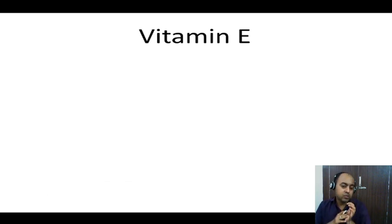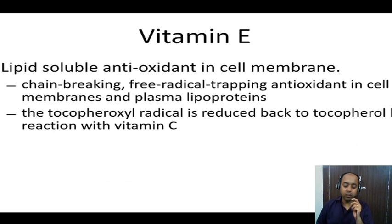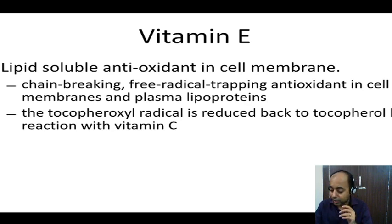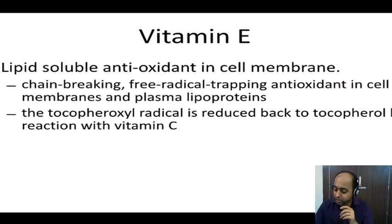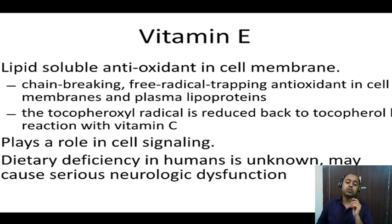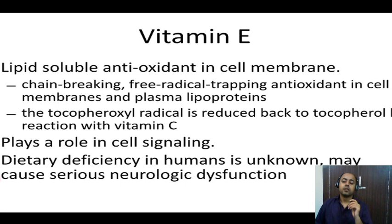Vitamin E functions are not entirely clear-cut and deficiency is not well documented. Vitamin E is a lipid-soluble antioxidant in the cell membrane — specifically a chain-breaking antioxidant and free radical-trapping antioxidant in cell membranes and plasma lipoproteins. Vitamin E is recycled by vitamin C. It also has an important role in cell signaling. Dietary deficiency is unknown, but it is suggested that deficiency may cause neurological dysfunction.